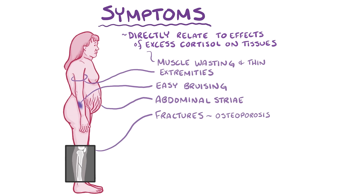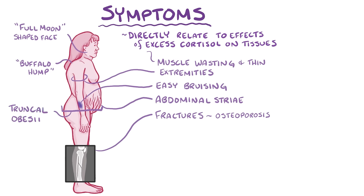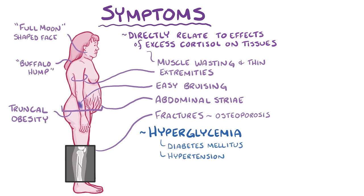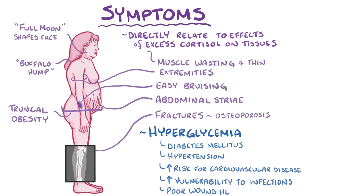At the same time, there's fat redistribution. Classic findings include a round, full moon-shaped face, a buffalo hump—which is a fatty hump on the upper back—and truncal obesity, where fat gathers around the abdomen and trunk rather than in the limbs. Finally, excess cortisol causes hyperglycemia or high blood sugar levels that can progress to diabetes mellitus, hypertension with a high risk for cardiovascular disease, increased vulnerability to infections, poor wound healing, amenorrhea or absent menstrual bleeding, and psychiatric or mental disturbances.